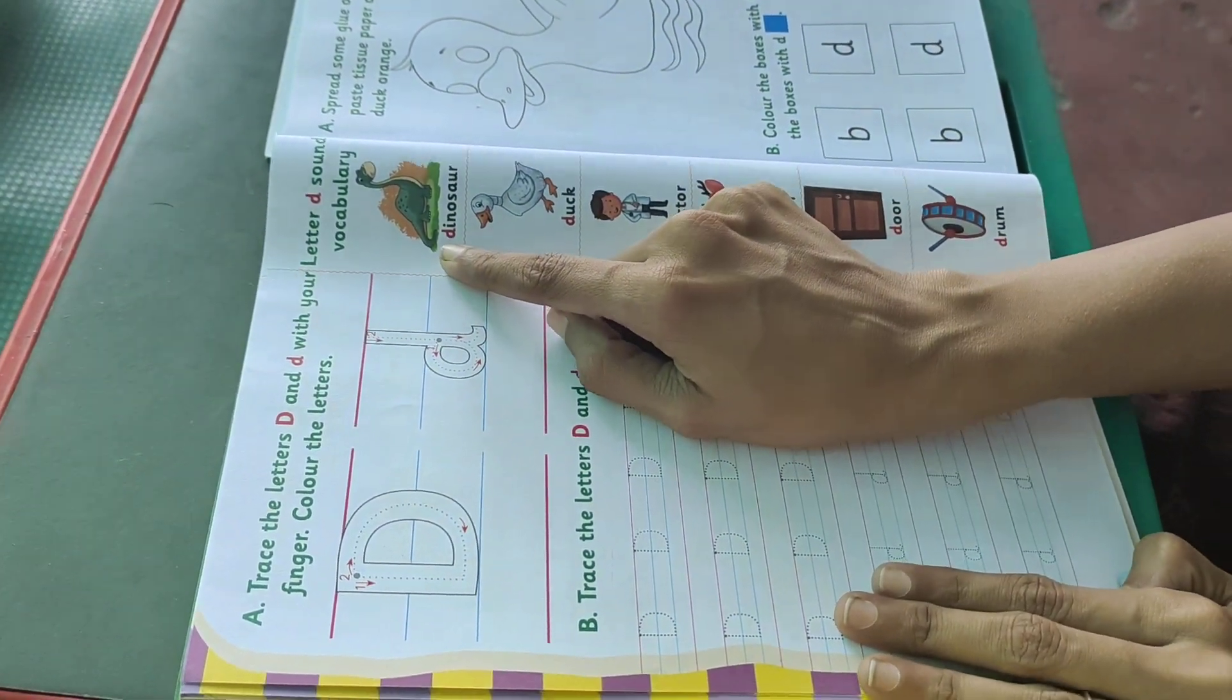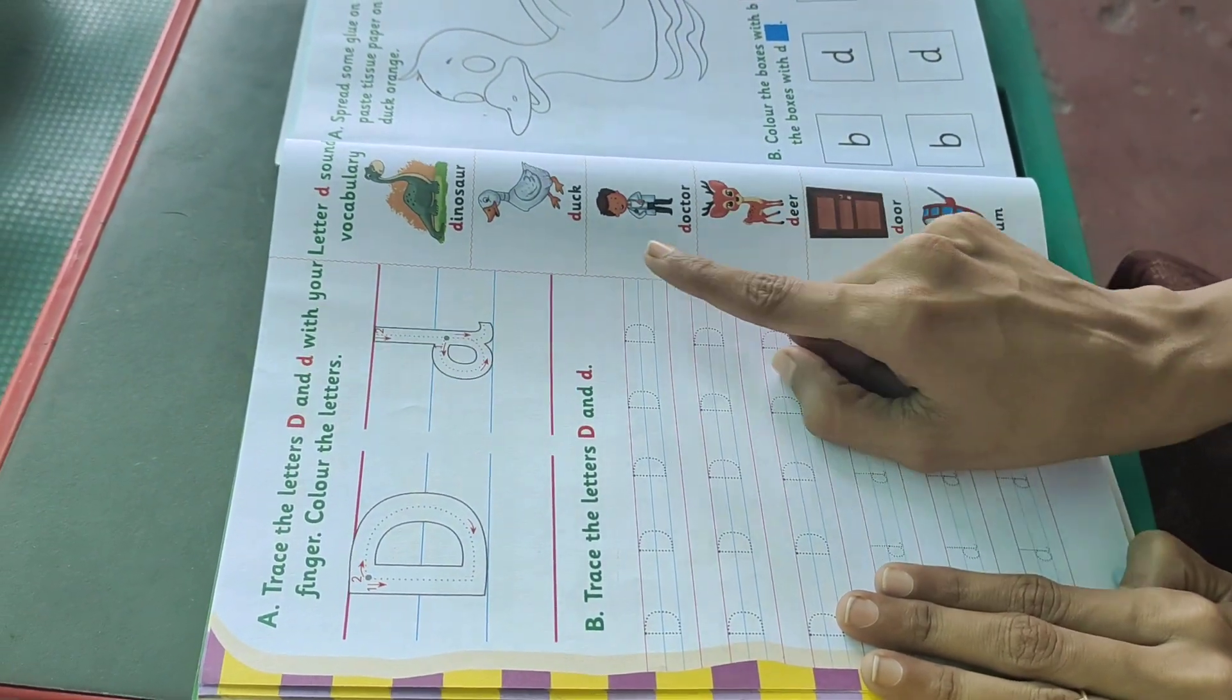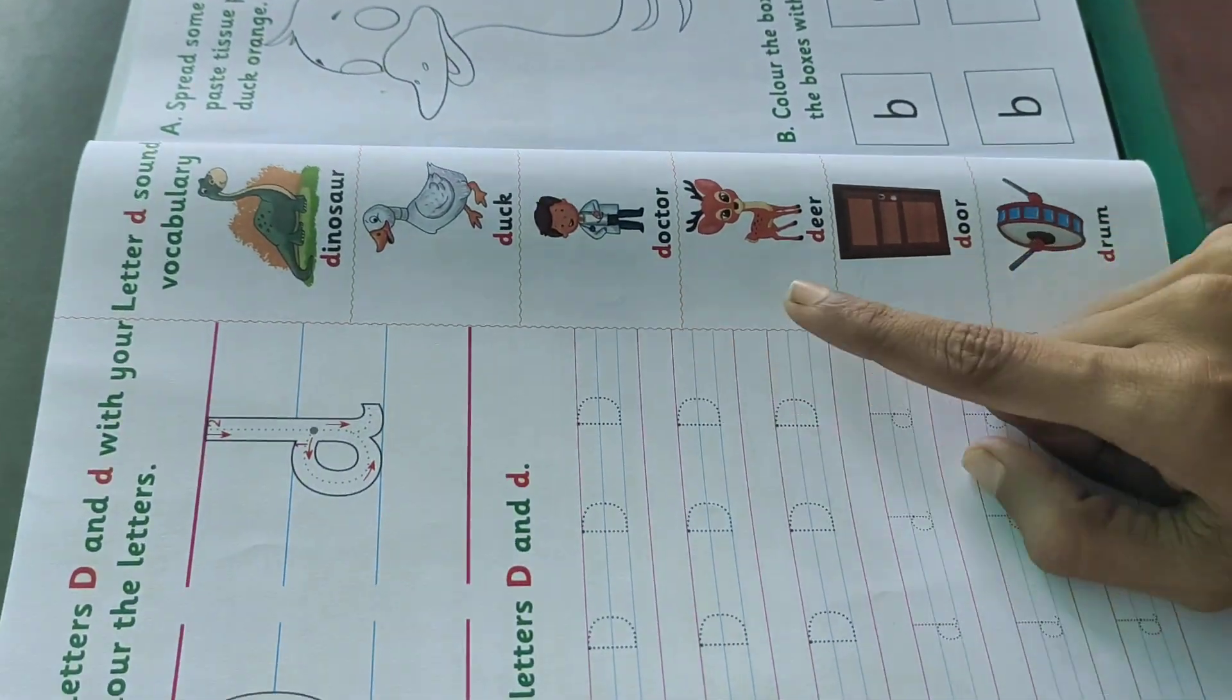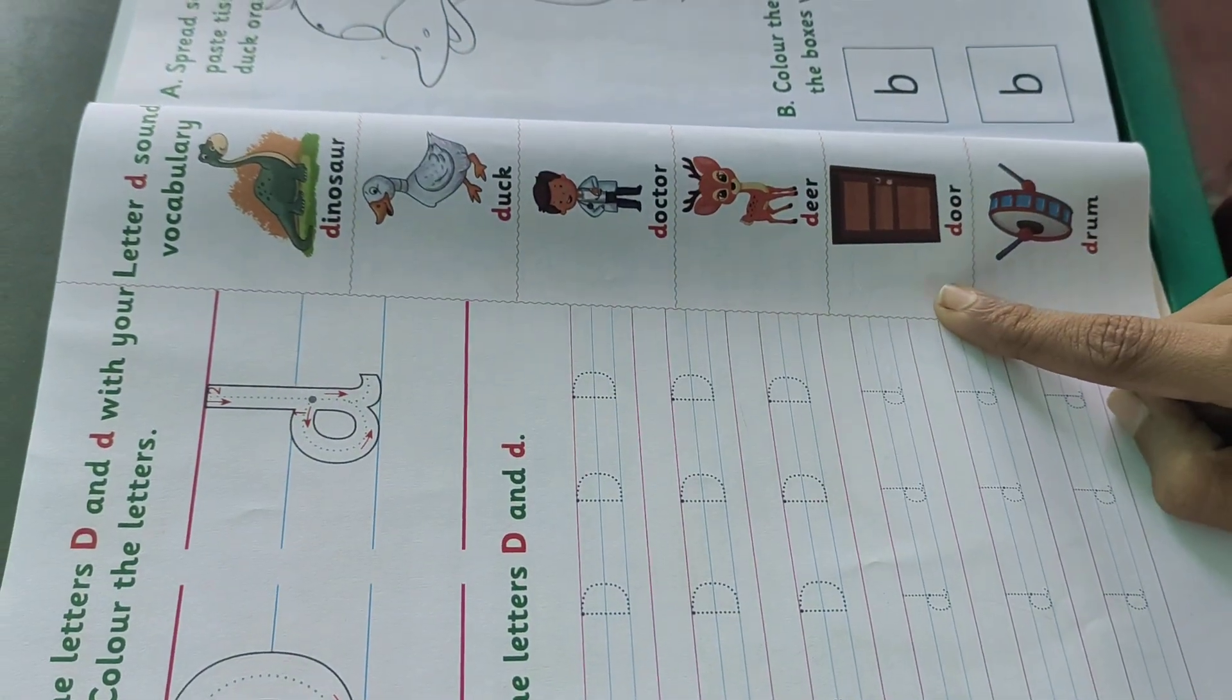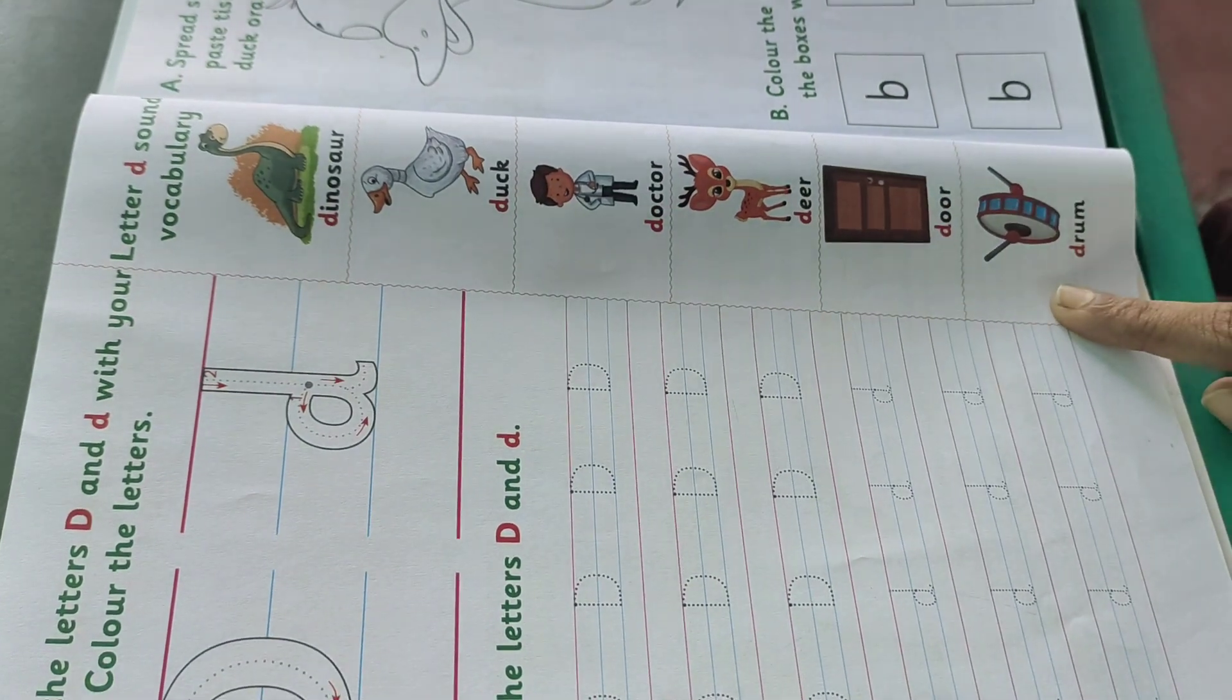Da da da da dinosaur. Da da da duck. Da da da doctor. Da da da deer. Da da da door. Da da drum.